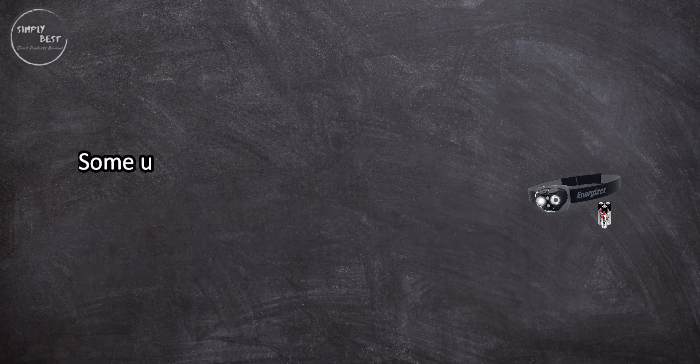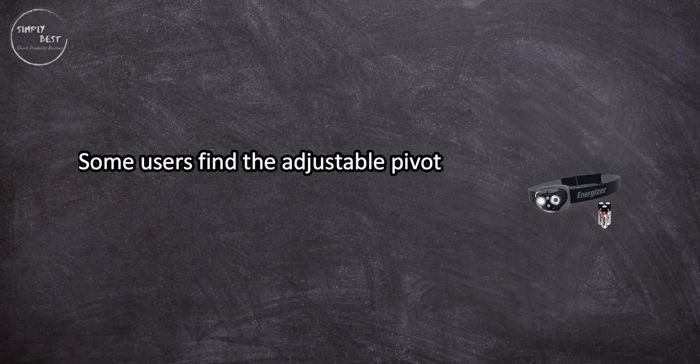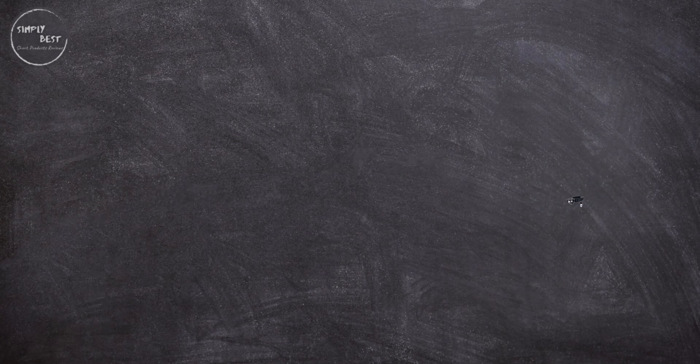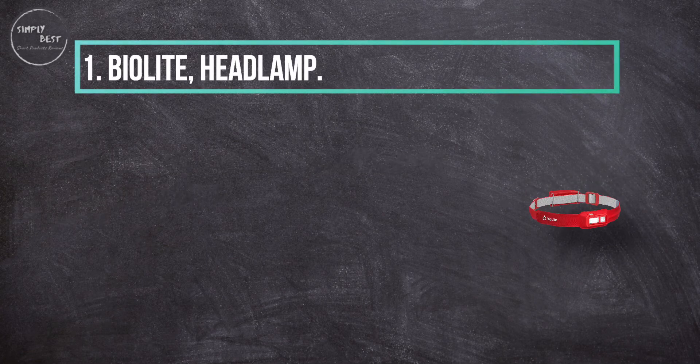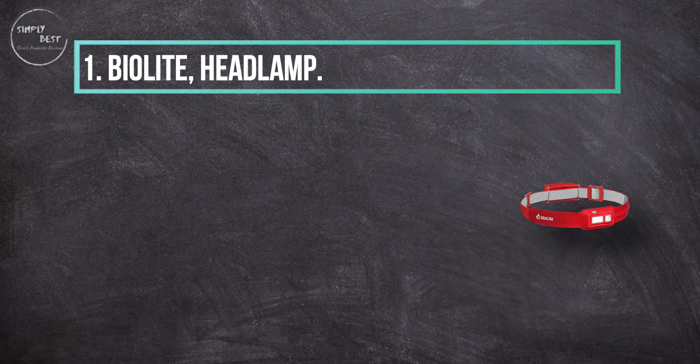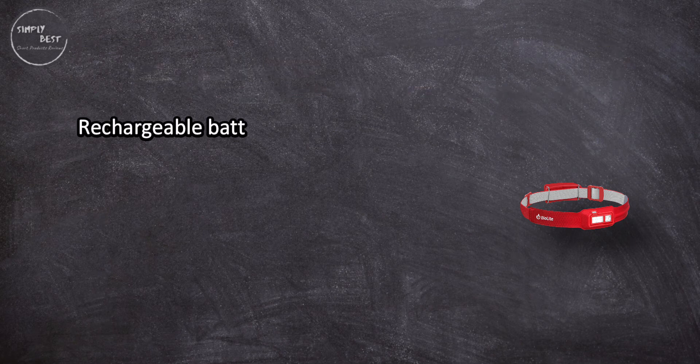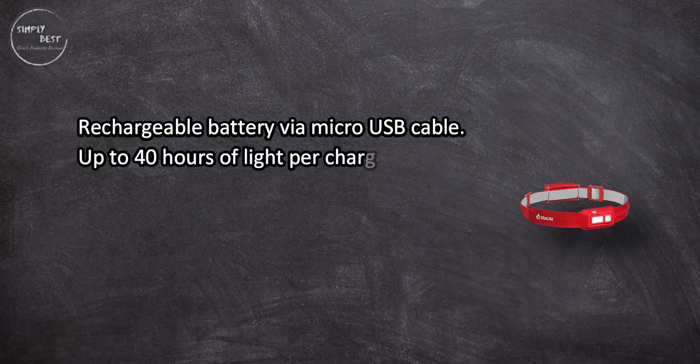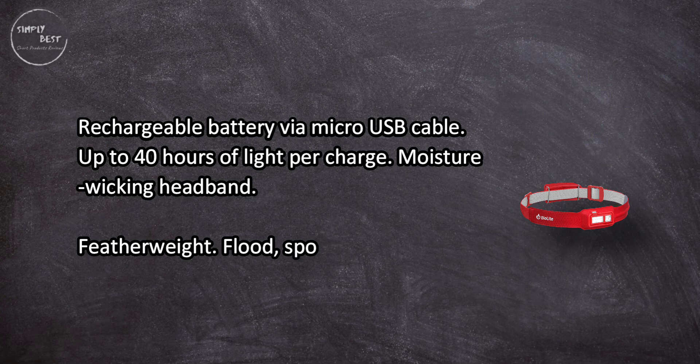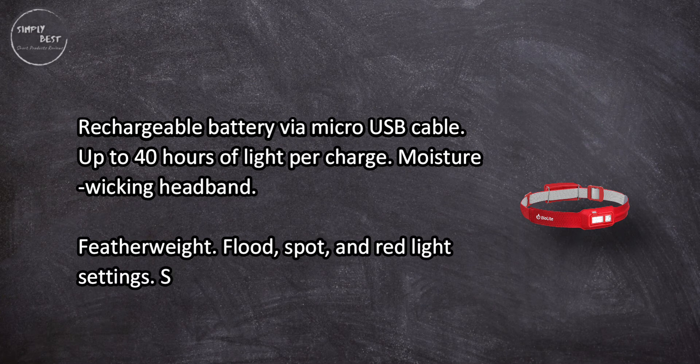At number one, By a light headlamp, rechargeable battery via micro USB cable, up to 40 hours of light per charge. Moisture-wicking headband, featherweight. Flood, spot, and red light settings. Slim flat design with no abrasion points for comfortability. Available in four colors.